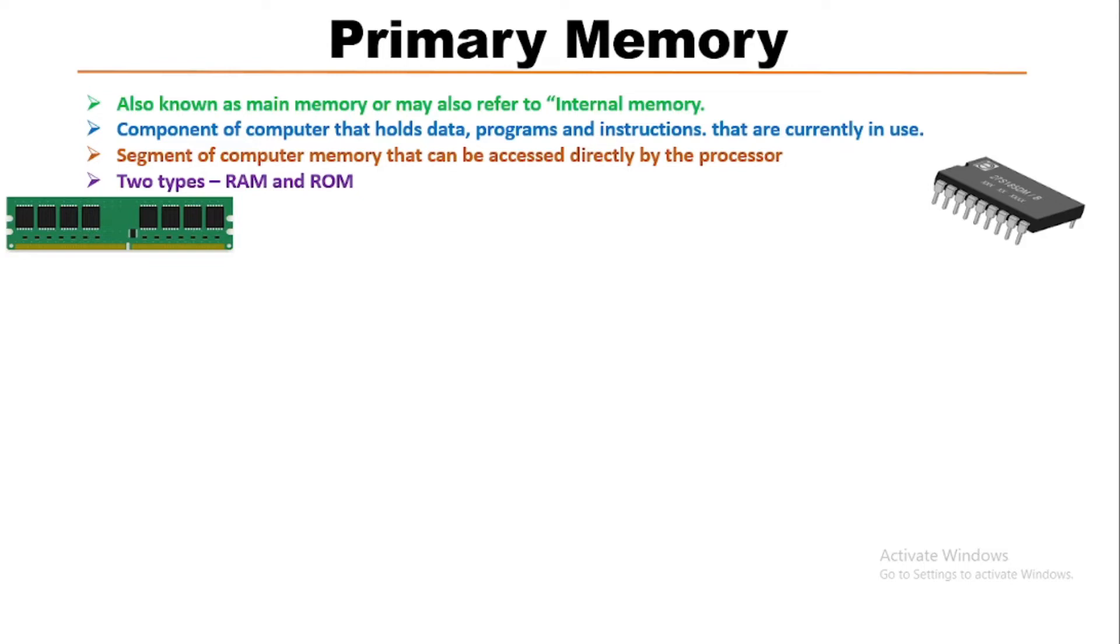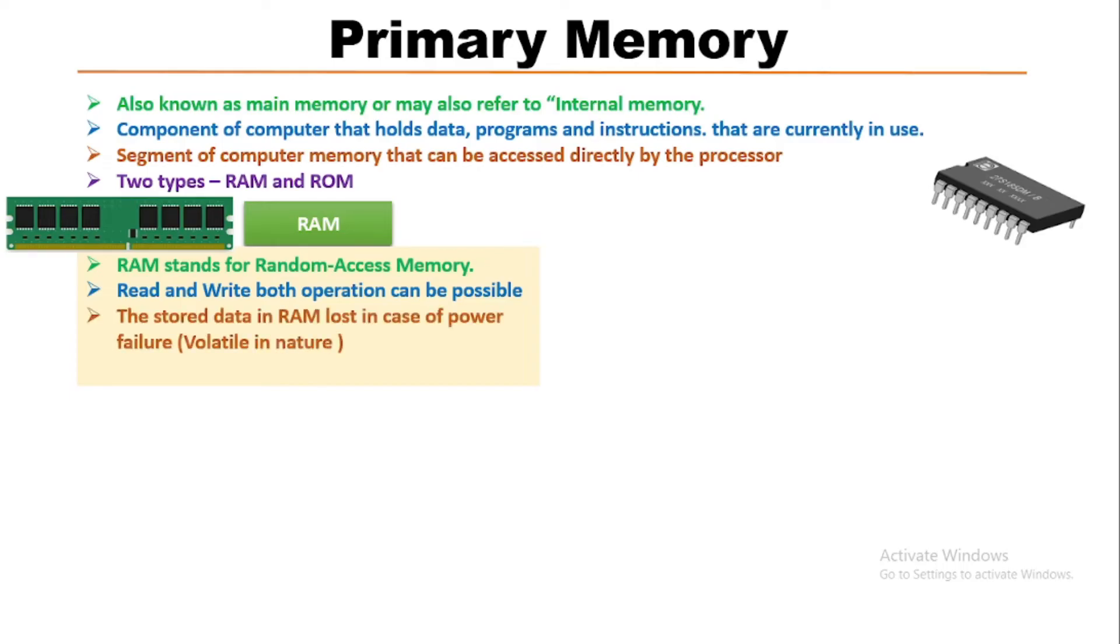Now we will learn about RAM. RAM stands for Random Access Memory. Both read and write operations are possible. It's also called volatile memory because stored data in RAM is lost in case of power failure. There are two types of RAM: SRAM and DRAM. SRAM stands for Static Random Access Memory.